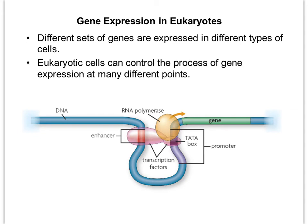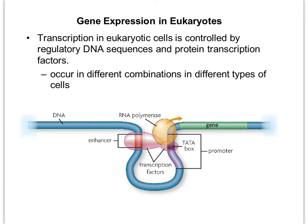Gene expression in eukaryotes is much more complicated because different sets of genes are expressed in different types of cells. Gene expression is straightforward in prokaryotes using operons — it's a simple on/off situation for a single-celled organism. But eukaryotes have trillions of cells and must regulate gene expression across all of them. Transcription in eukaryotes is controlled by two elements: regulatory DNA sequences and protein transcription factors, which occur in different combinations in different cell types.